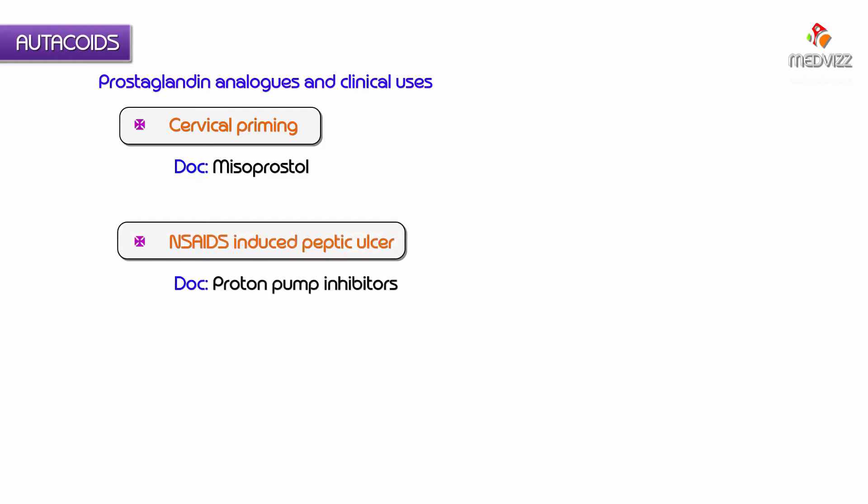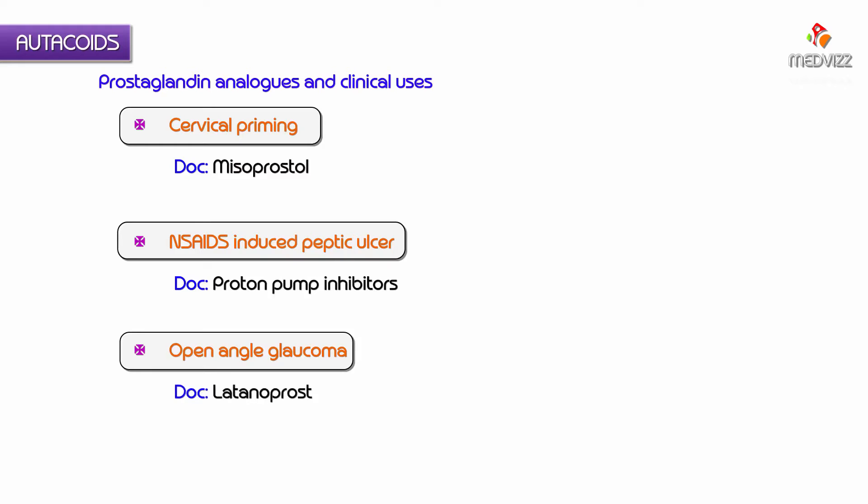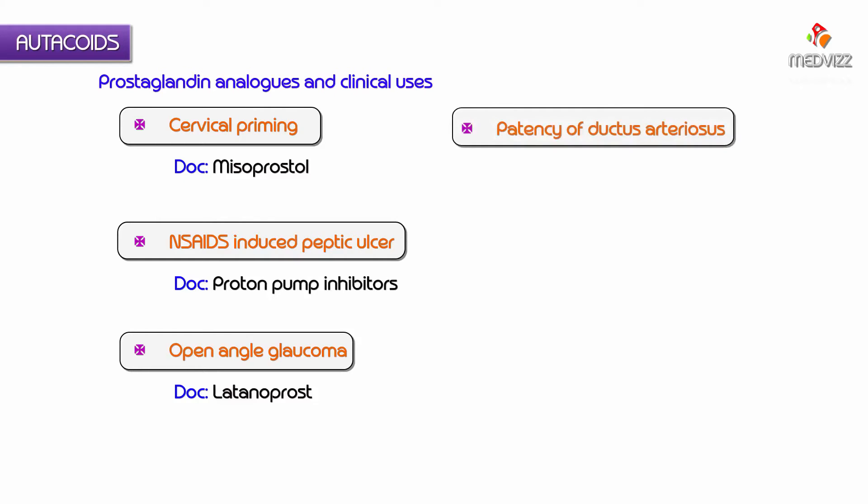For NSAID-induced peptic ulcer, the drug of choice is proton pump inhibitors. For open-angle glaucoma, the drug of choice is latanoprost. To maintain the patency of ductus arteriosus, the drug of choice is alprostadil.